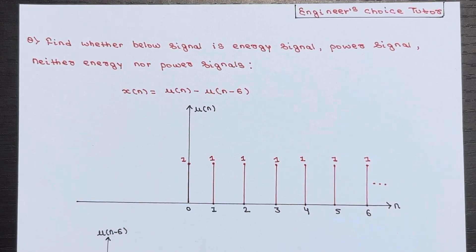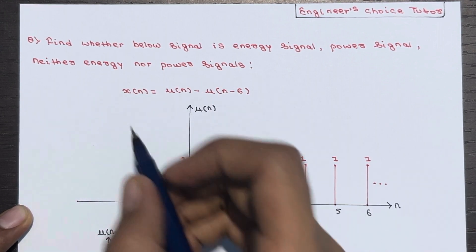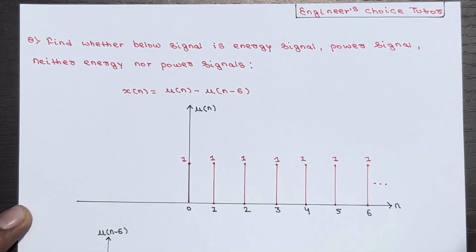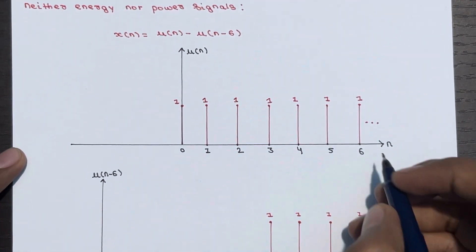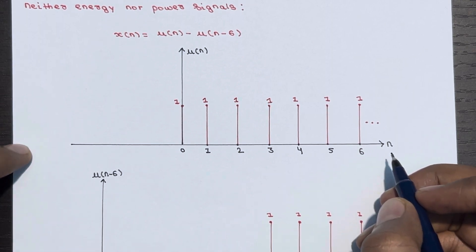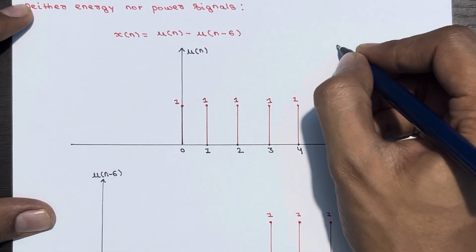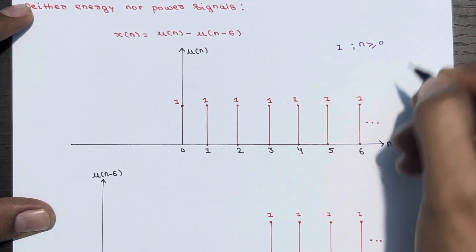In this lecture we'll see another numerical based on energy signal and power signal. Find whether the below signal is energy signal, power signal, or neither energy nor power signal. So x of n is equal to u of n minus u of n minus 6. You should know about u of n — it is a unit step signal, starting from n equal to 0, giving 1 for n greater than or equal to 0.